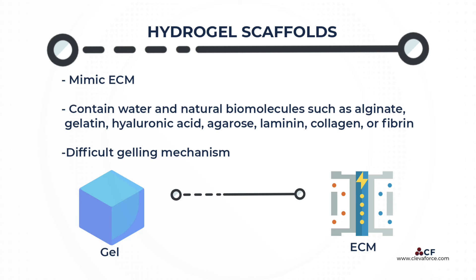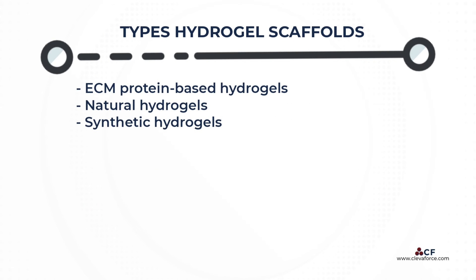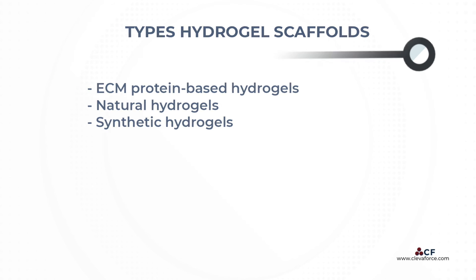The gelling mechanism used to solidify a gel precursor, however, can be difficult to prepare and manipulate at times. Depending on the nature of the polymer, hydrogels can be classified into different categories: ECM protein-based hydrogels, natural hydrogels, and synthetic hydrogels, with distinct properties, the scope of which is not within what is intended for this course.